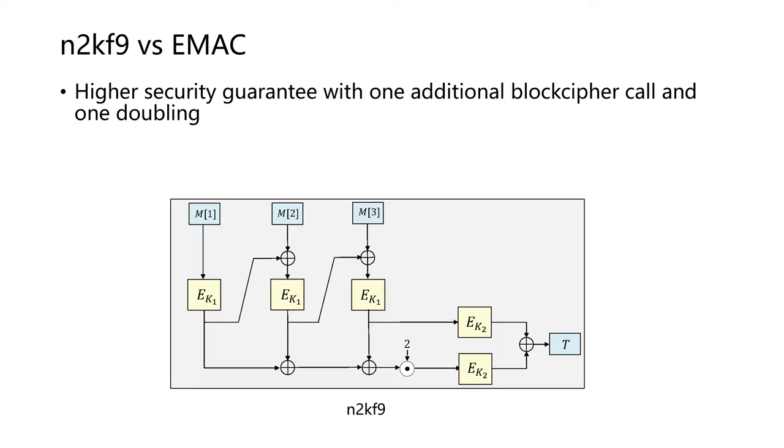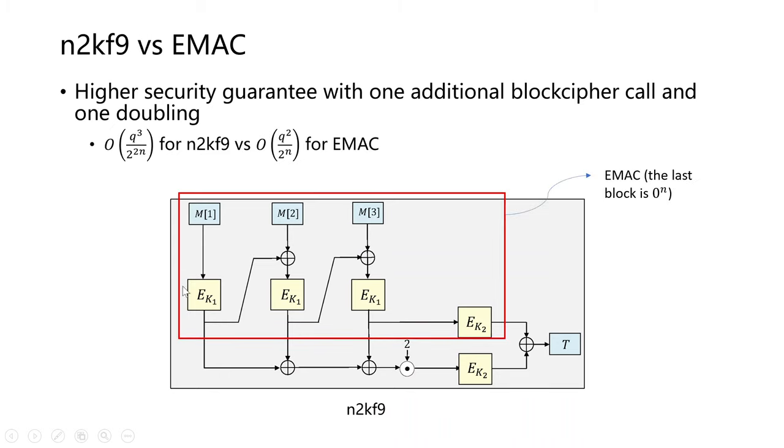If we compare n2kf9 with EMAC, n2kf9 can provide a higher security guarantee with one additional block cipher call and one doubling. The top part can be regarded as EMAC where the last block is always zero. For n2kf9, the security bound is beyond-birthday-bound.